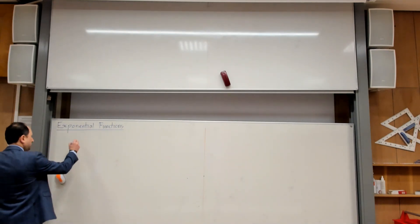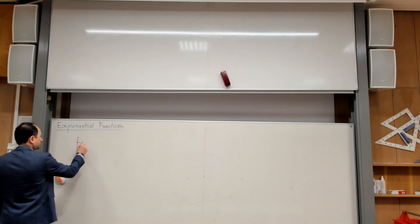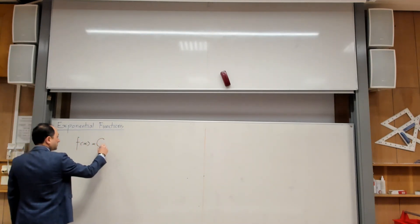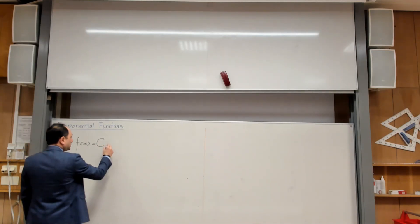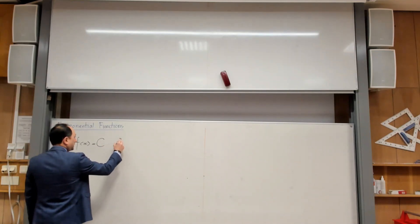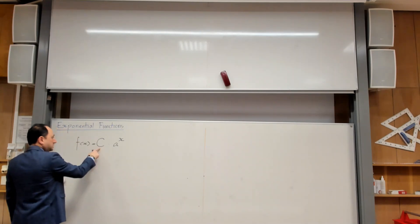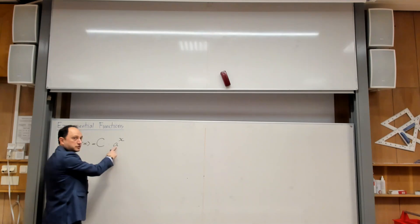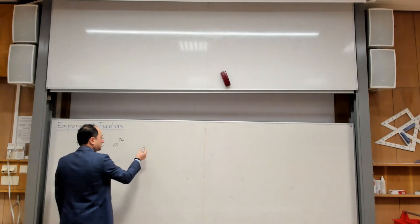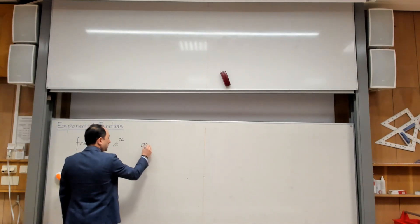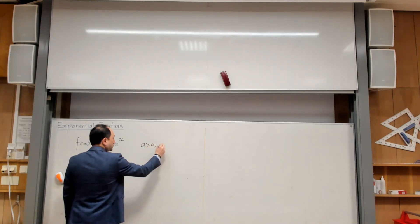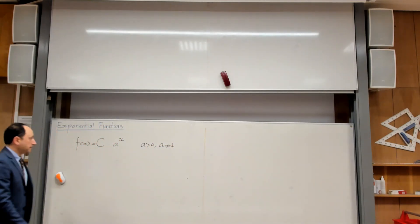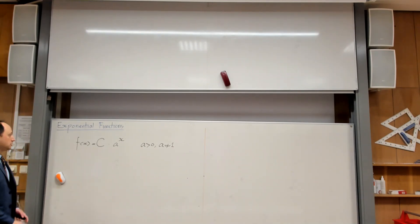If you have a function f of x which is equal to a constant c multiplied by a to the power x, then c is a constant and a is also a constant, but we have some limitations. The limitations are that a should be positive and a should not be equal to 1. This is called an exponential function.